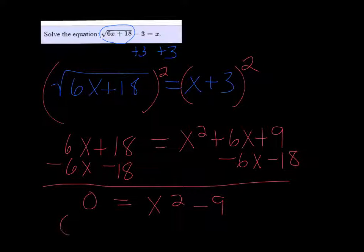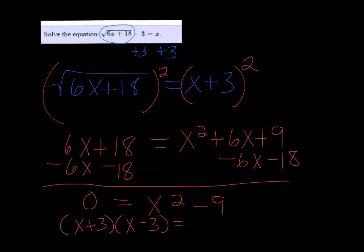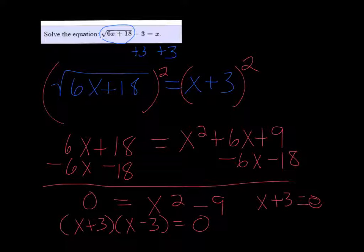Well, x squared minus 9 factors to x plus 3 and x minus 3. If you set each one equal to 0, when you set x plus 3 equal to 0, you get x equals negative 3.